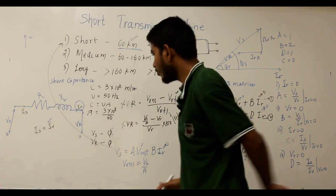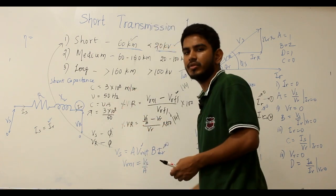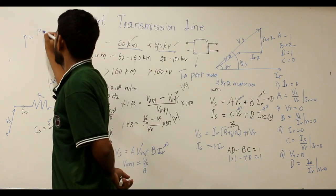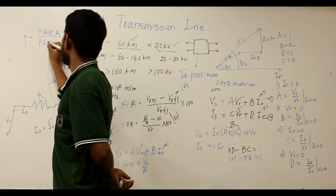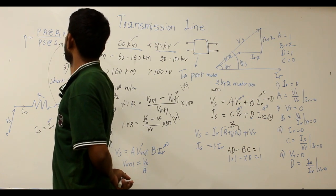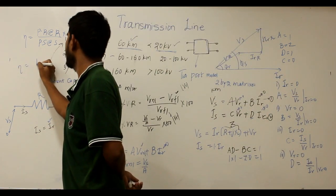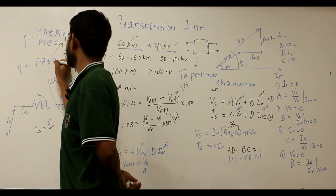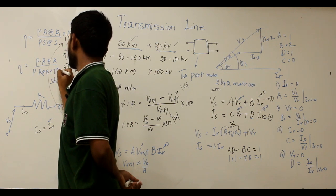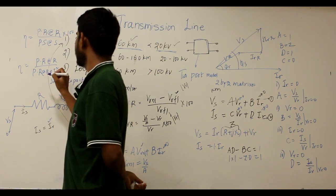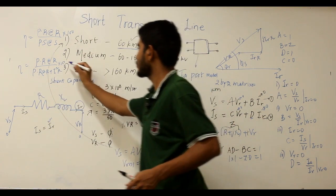The efficiency of the short transmission line is found conventionally as the power received at the receiving end divided by the power sent at the sending end, multiplied by 100. Alternatively, efficiency η = power received / (power received + I²R), where R is the equivalent resistance per phase.